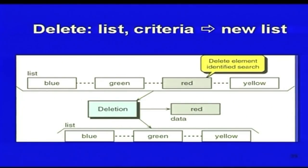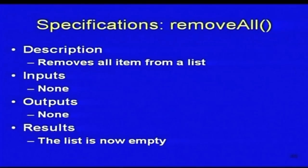For example, given the list [blue, green, red, yellow] and you want to delete the element 'red', after the deletion operation the list becomes [blue, green, yellow] and the output returned is 'red', meaning red has been deleted. Another operation is remove_all — all elements of the list are removed. The input is none, the output is none, but after the operation the list is empty.